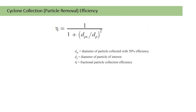The next formula is the cyclone collection or particle removal efficiency. A cyclone is a device used for removal of particulate matter from exhaust from industries or power plants. The efficiency formula is: η = 1 / [1 + (d_pc / d_p)²], where d_pc is the diameter of the particle collected at 50% efficiency, d_p is the diameter of the particulate of interest, and η is the fractional particle collection efficiency.